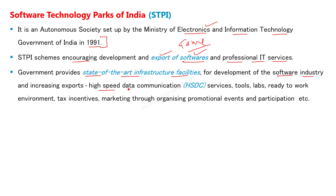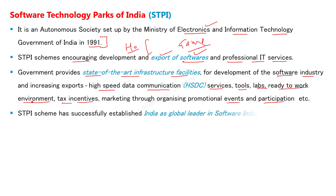High speed data communication यानि internet connectivity जिसे HSDC कहते हैं वो high level पर उपलब्ध कराई जाती है। Startup के लिए ready-to-work environment मिलता है - जैसे hotel में आप पैसा देते हैं और ready-to-live format में room मिल जाता है। Government tax incentives देती है, 100% foreign equity भी शामिल है, और different events organize करना, participation ensure करना - तरह-तरह की सुविधाएं government देती है। STPIs successfully established India as a global leader in software world, और millions of dollars का कारोबार India से होता है।